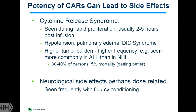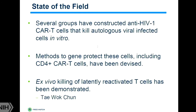Cytokine release syndrome is being handled really well and there are very few deaths from it now — through learning how to manage it medically and by giving lower doses. It has been reduced to 5% to 10%, and mortality in most ALL trials is down to 1% to 2%. An important issue for CAR T-cells and HIV are the neurological side effects, which appear dose-related and are seen in 10% to 20% of persons in some groups. Gratifyingly, there are biomarkers associated with subsequent development of neurotoxicity, which are dose-related, so as we get better CAR T-cells we will be able to move into clinical trials.